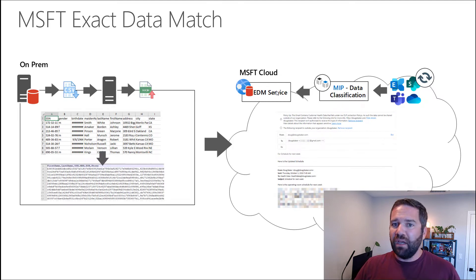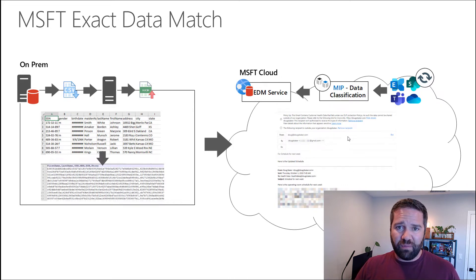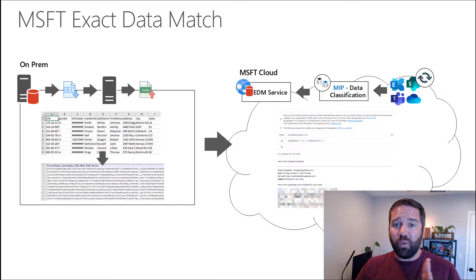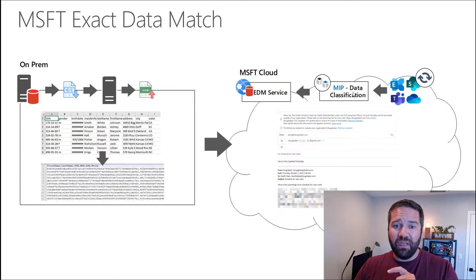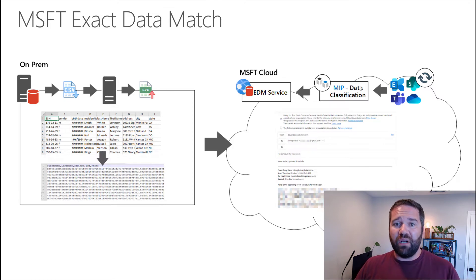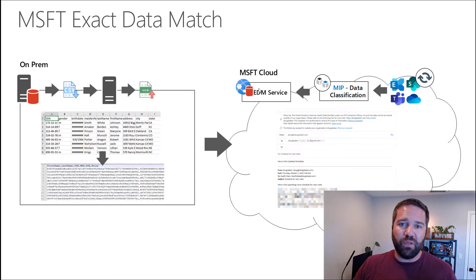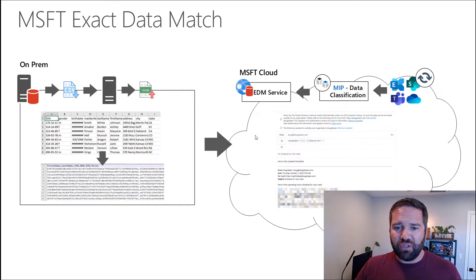So that's how you should be thinking about building these things — it's an extension of the data classification service, not a standalone product. You first need to match on the classification, then you move to EDM. One gotcha to watch out for: in the case of a social security number, if your classification requires a keyword and it never finds the keyword 'SSN' or 'social security number,' it will never flow over to the EDM classification. So as you build your EDM policies, you need to make sure your definitions are matching on the lowest-level policy possible so it sends the data over to EDM to remove all doubt.